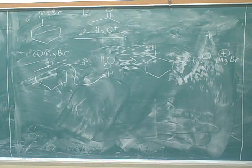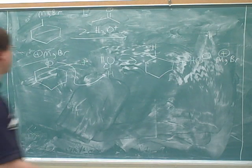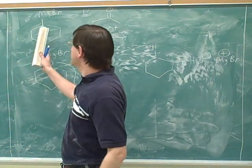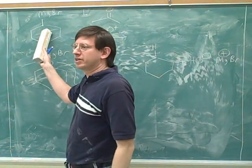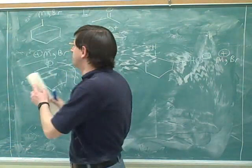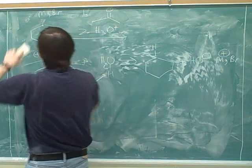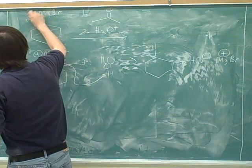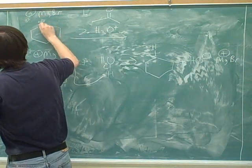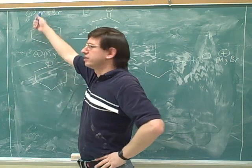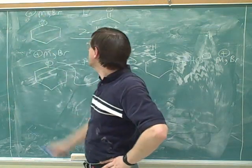The first step should be easy - redraw the starting material in a more useful form. I erase the covalent bond, put the negative charge over here, and from this point on I'm almost going to just ignore this counter ion.